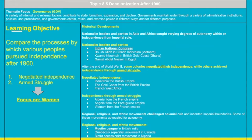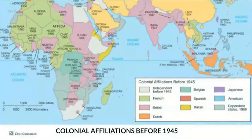Religious, regional, and ethnic movements were also very important - for example, the Muslim League in British India played an instrumental role in removing the British. Now looking at this map, before 1945 almost every color represents French, British, Dutch, Belgian, Spanish, Italian, Japanese, or American control over Africa, South Asia, and Southeast Asia.